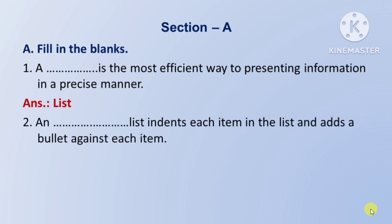Next question: a list that indents each item in the list and adds a bullet against each item — woh kaun si list hai jo list ke pratyek item ko indent kar deti hai aur uske aage ek bullet add kar deti hai. So this answer hai: unordered list.